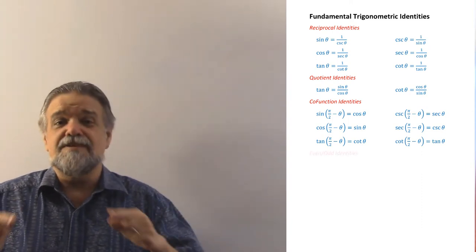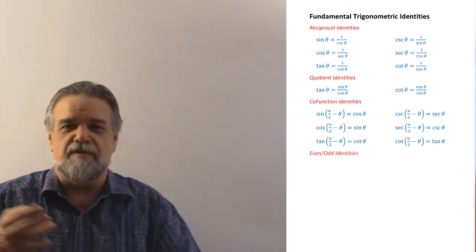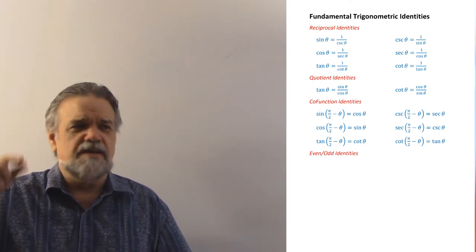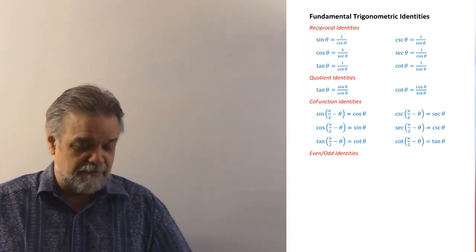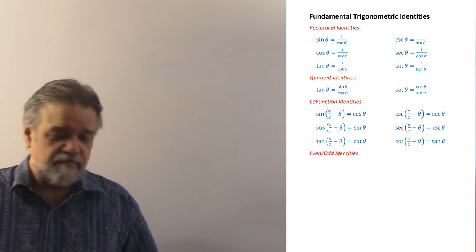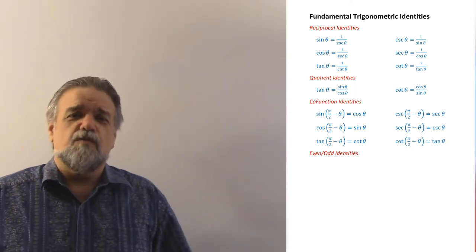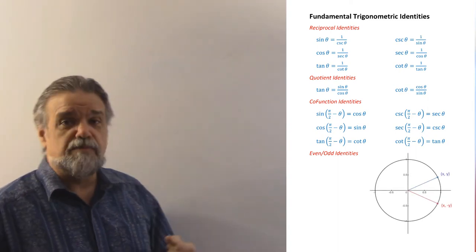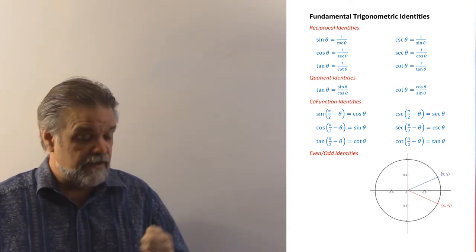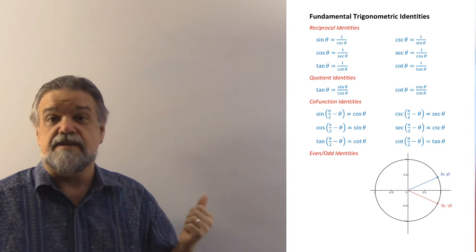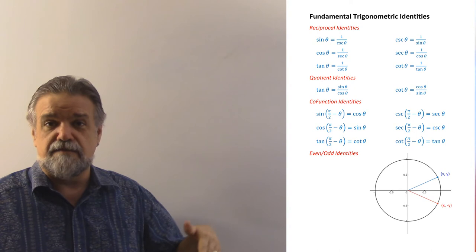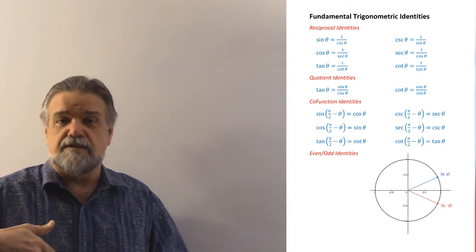Next we have our even-odd functions. You probably already know this — we've pointed out several times that the sine function is odd and the cosine function is even. We know that by looking at an angle and the negative of that angle. The blue angle is theta and the red angle is negative theta. The difference is that negative theta is just theta reflected over the x-axis.